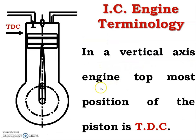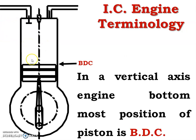In a vertical axis engine, the topmost position of the piston is known as TDC, that is the top dead center. And in the same vertical engine, the bottommost position of piston is known as the bottom dead center, that is BDC.